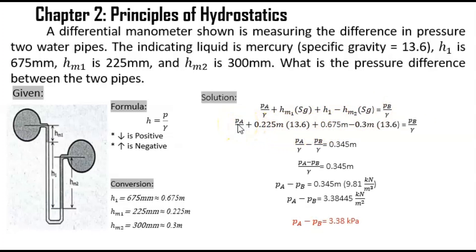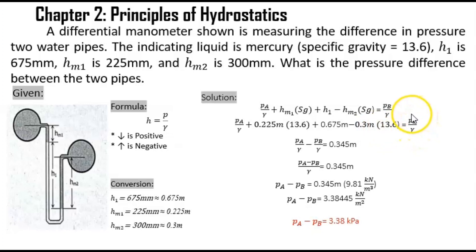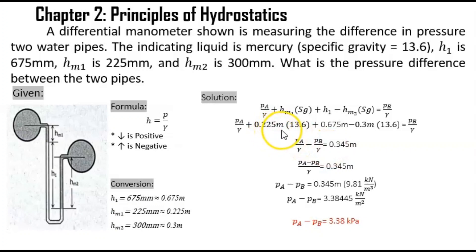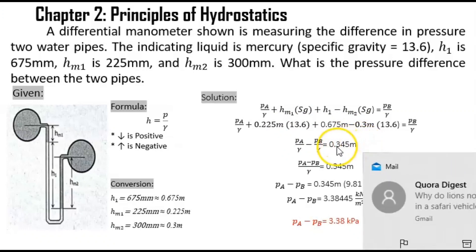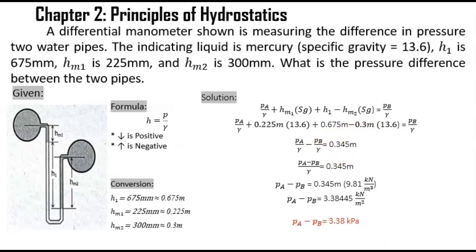Substituting our given values into the equation: pressure A over specific weight plus 0.225 meters times 13.6, plus 0.675 meters, minus 0.3 times 13.6, equals pressure B over specific weight. Combining like terms by transposing, we get: pressure A over specific weight minus pressure B over specific weight equals negative 0.225 times 13.6 minus 0.675 plus 0.3 times 13.6, which equals 0.345 meters.